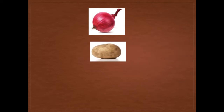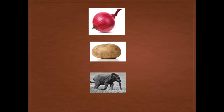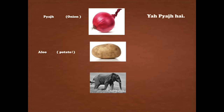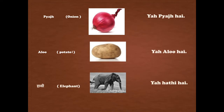This is a potato — potato meaning aalu: yaha aalu hai. Pyaaj means onion: yaha pyaaj hai. Hathi means elephant: yaha hathi hai. So those are the example sentences using yaha for nearby things.